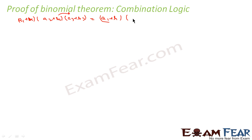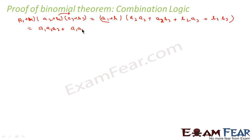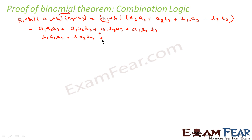So I'll get (a1 + b1) into (a2·a3 + a2·b3 + b2·a3 + b2·b3). Now I'm going to multiply (a1, b1) with this. So what I'll get is: a1·a2·a3 + a1·a2·b3 + a1·b2·a3 + a1·b2·b3 + b1·a2·a3 + b1·a2·b3 + b1·b2·a3 + b1·b2·b3. I've multiplied a1 with all terms, then b1 with all terms, and got this result.